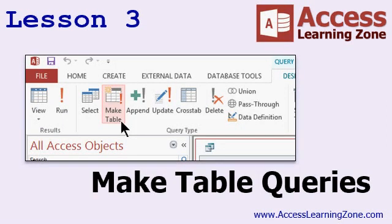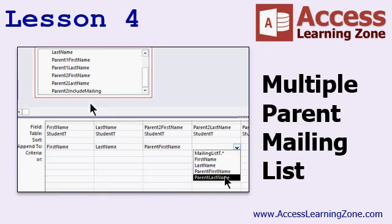In lesson three, we're going to learn about make table queries — how we can set up a query to create a new table based on other data. In lesson four, we're going to set up a multiple parent mailing list. We have a single student table with the student's first and last name, plus two parents in the same record. We need to be able to send multiple mailings so that each parent, who might not live together, gets separate mailings. So we'll look at how to set that up properly in our database to create that mailing list.